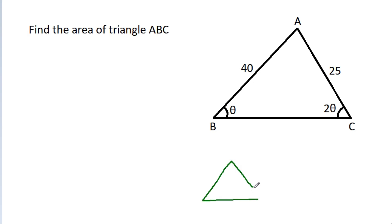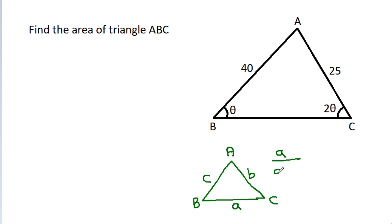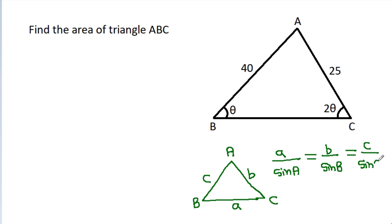In any triangle A, B, C, if BC is a, AC is b, and AB is c, then by the sine rule: a divided by sine A equals b divided by sine B, equals c divided by sine C.